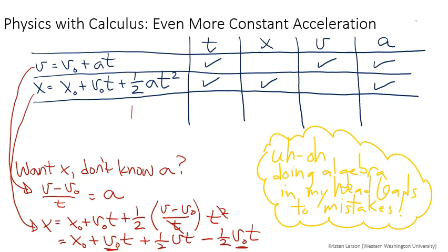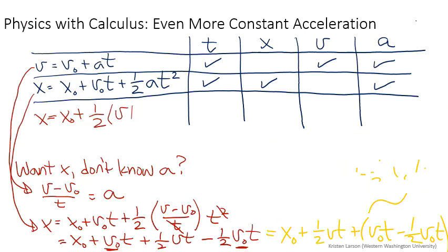I'm going to simplify that, and you can show in more detail that this is true, that I get that x is equal to x0 plus one-half, and I have a factor of v, and then I have a full factor of v0 minus one-half factor of v0, so that's one remaining factor of v0 times t. So I have another equation.